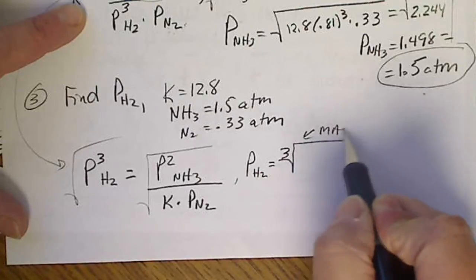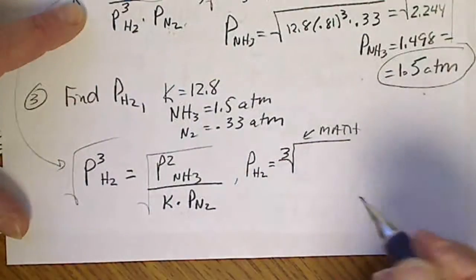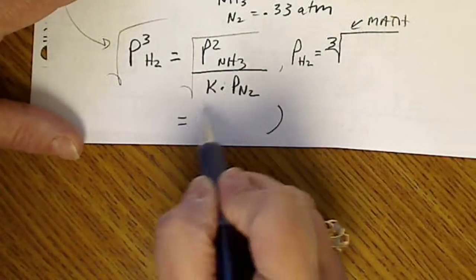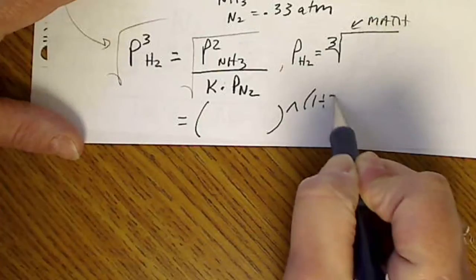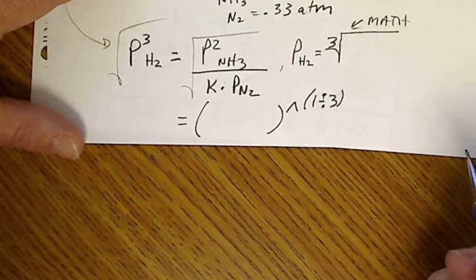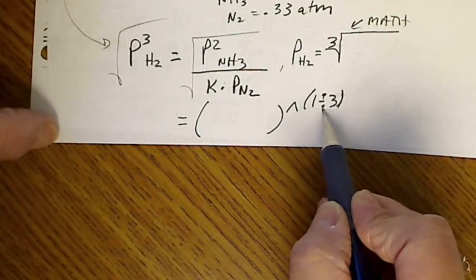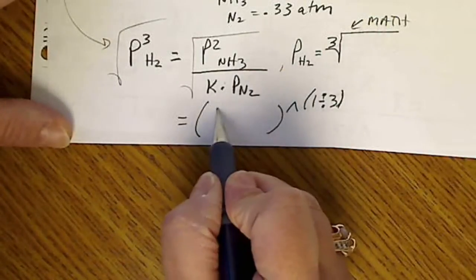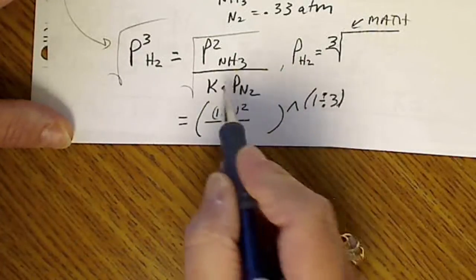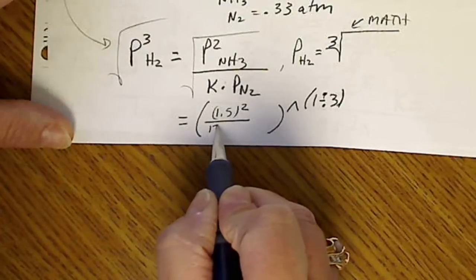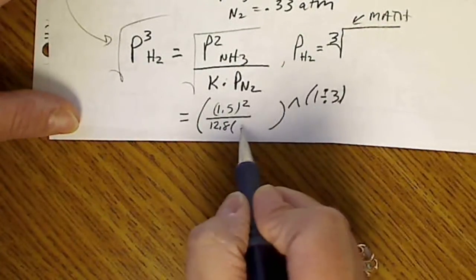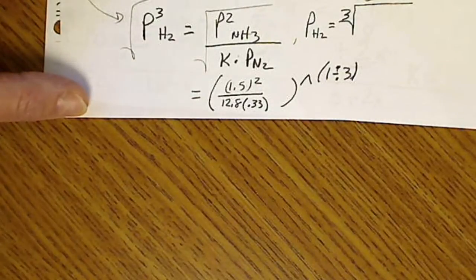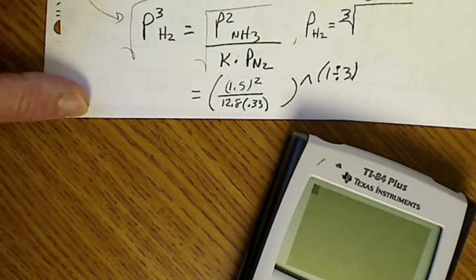What I find easier to do is just raise everything to the 1 third power, because otherwise we have to go to the math function key and pick the cube root. So what I'm going to do is plug all these values in that we're given, and then I'm going to raise all of that to the 1 divided by 3. Raise that to the 1 third power. That has to be in parentheses, because this is a repeating decimal, 0.33333. And so now I'm just going to plug in these values. So for NH3, we had 1.5 squared, divided by K, which was 12.8, divided by the nitrogen, which was 0.33. So if I plug that in, just as it's written, let me call it out. So 1.5, we're going to square that.